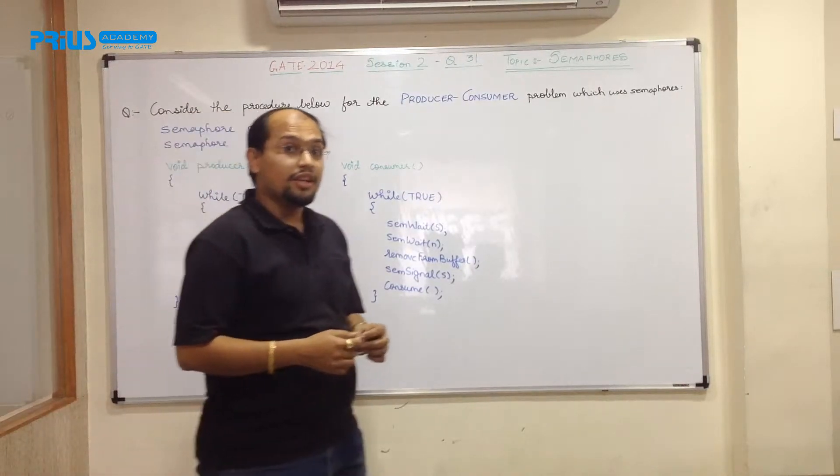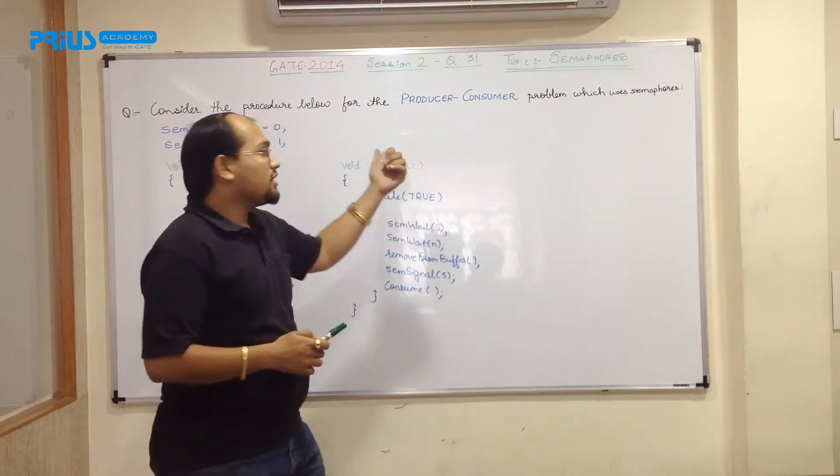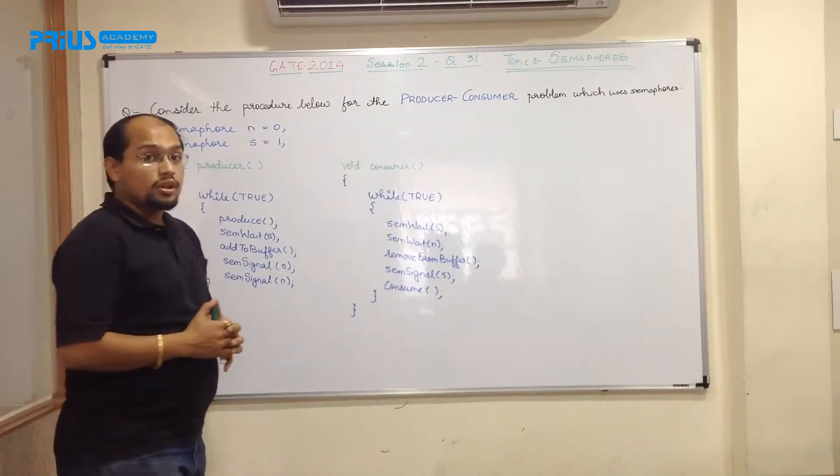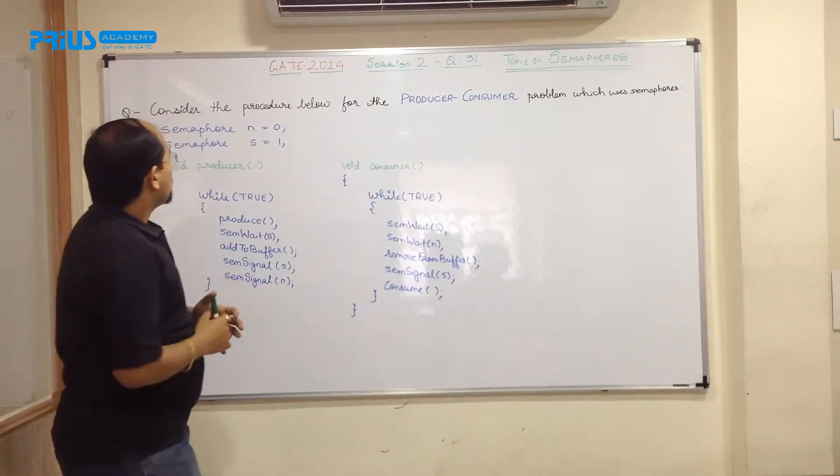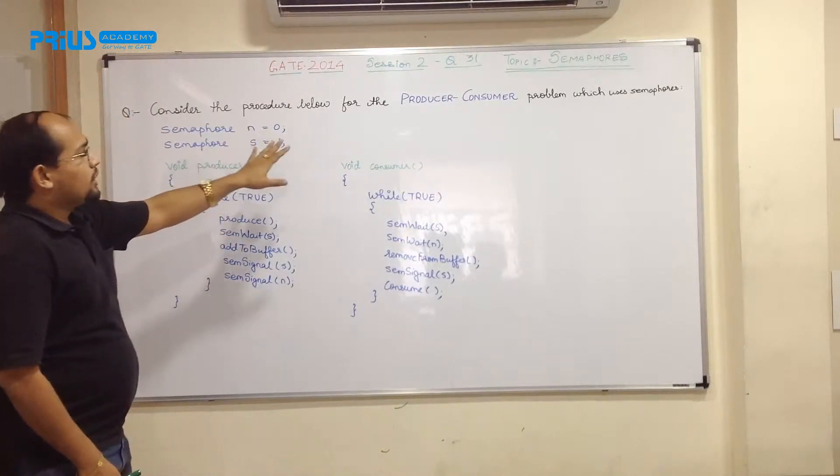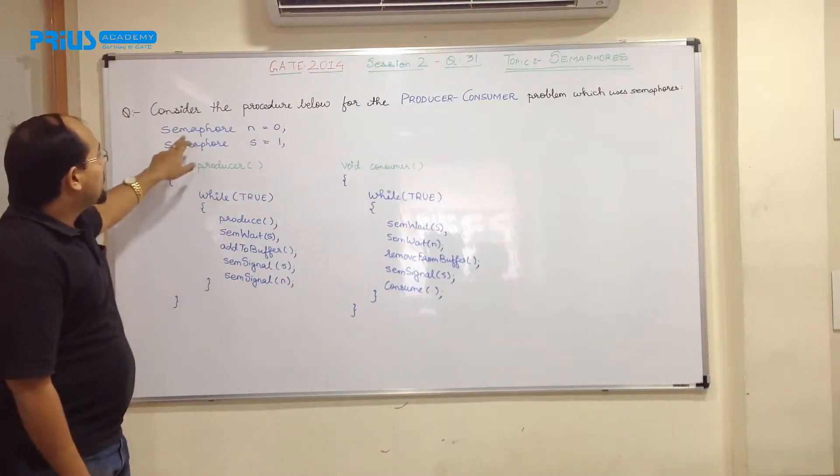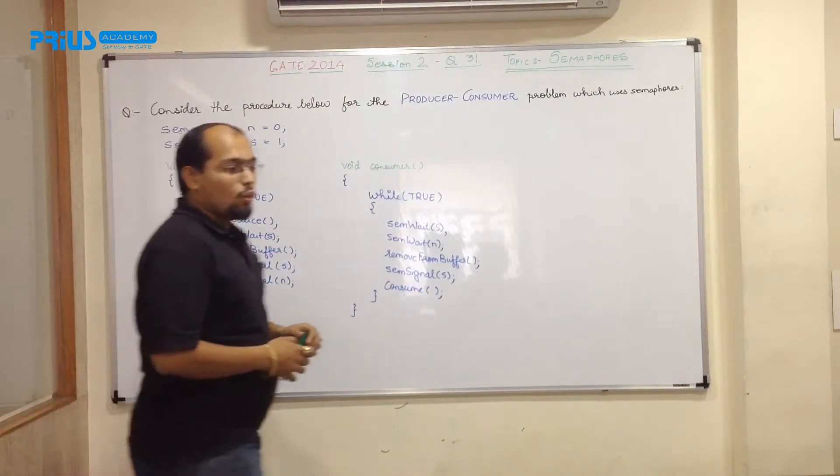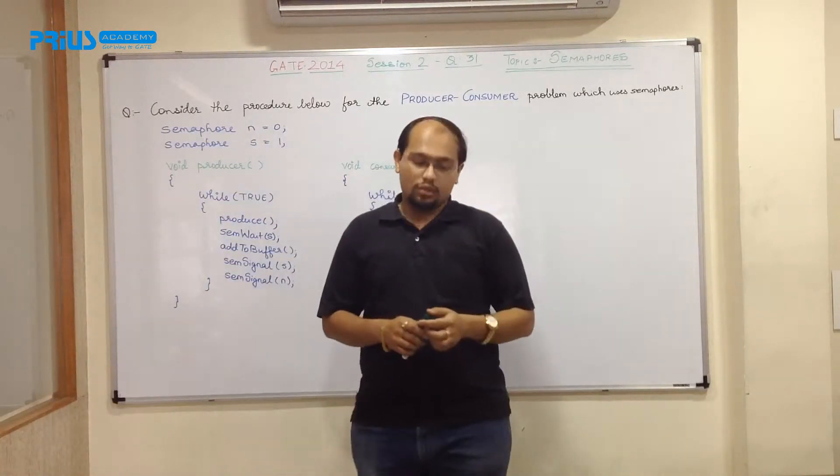So this is your session 2, there were 3 sessions in GATE 2014, so this is the second session, question number 31 which is purely on your semaphore, a producer-consumer problem. So what is the question? It is saying consider that you are given a producer-consumer problem which is having semaphore value n equal to 0 and semaphore s equal to 1.